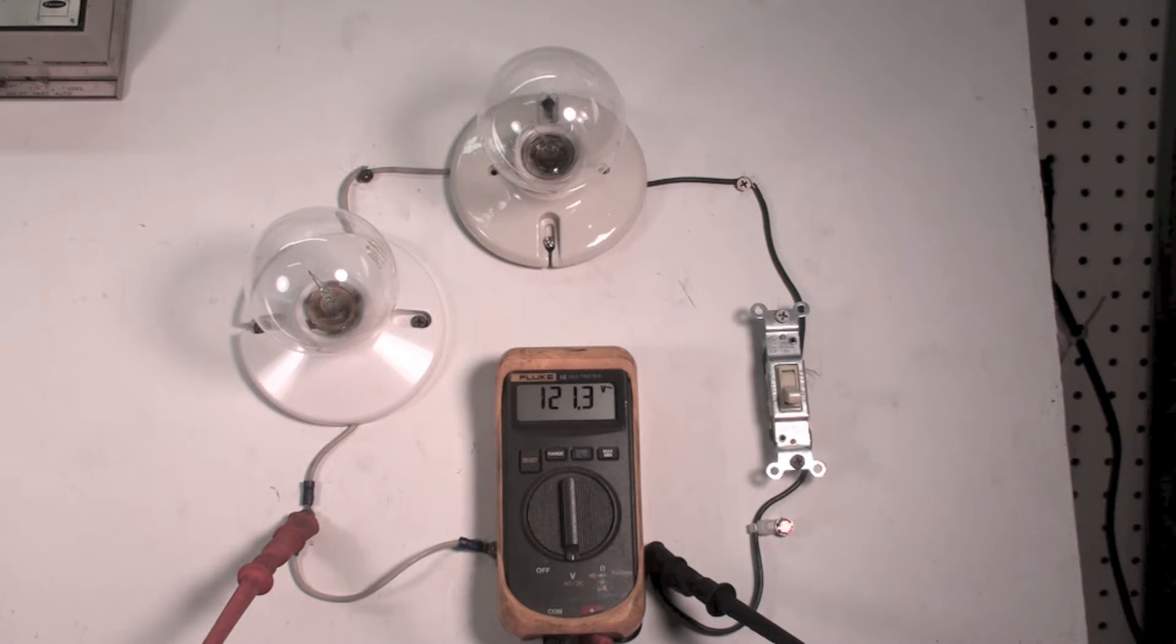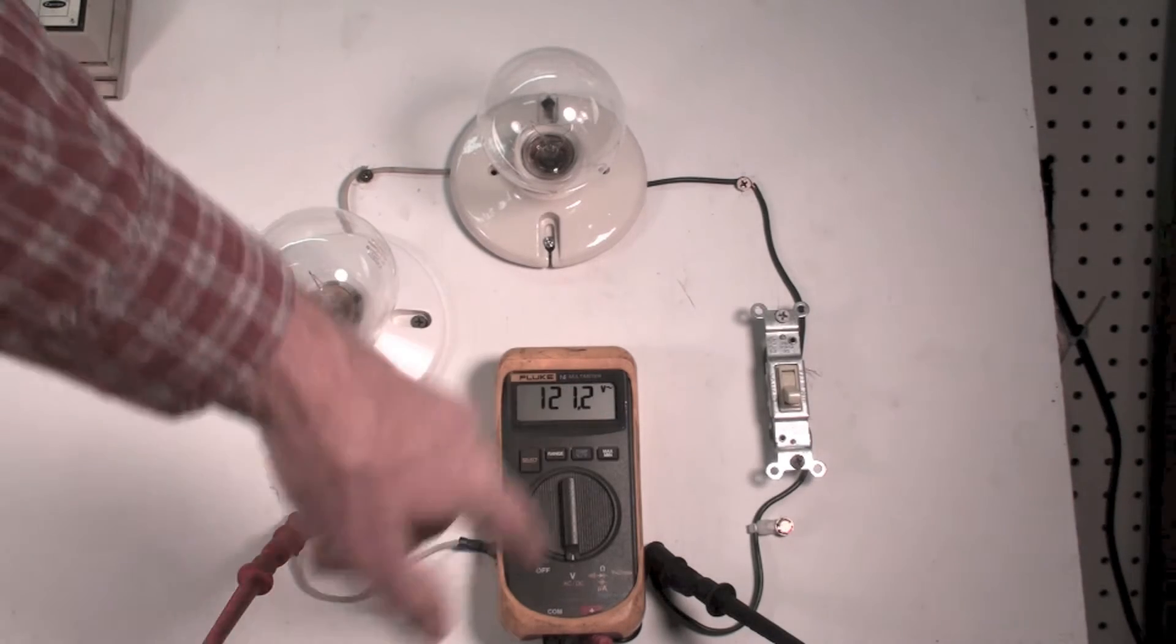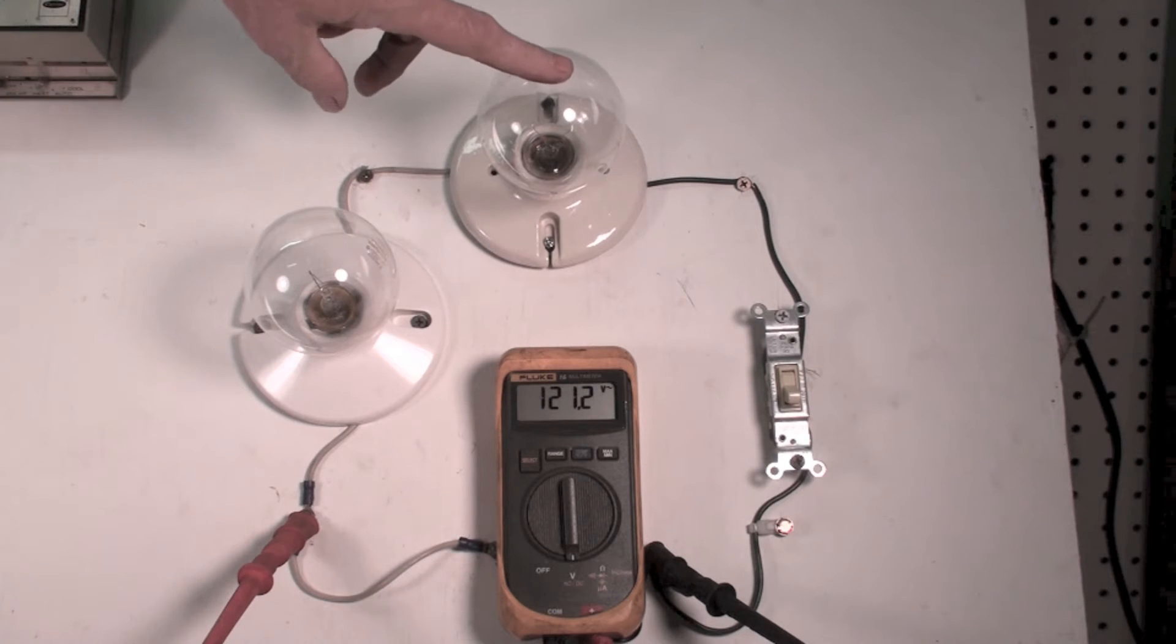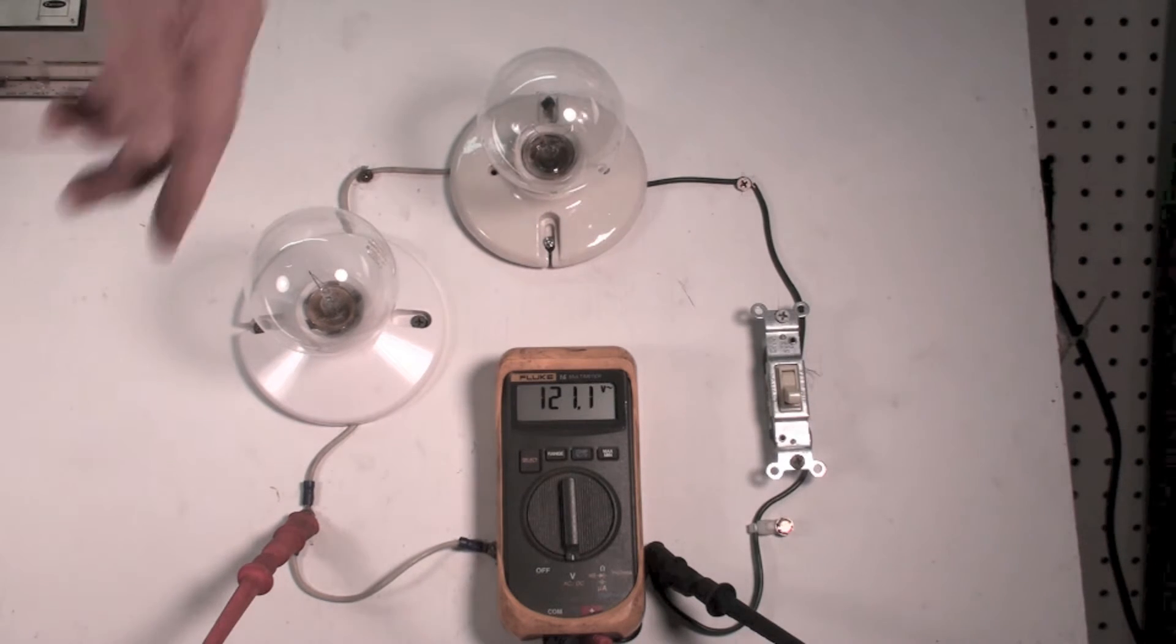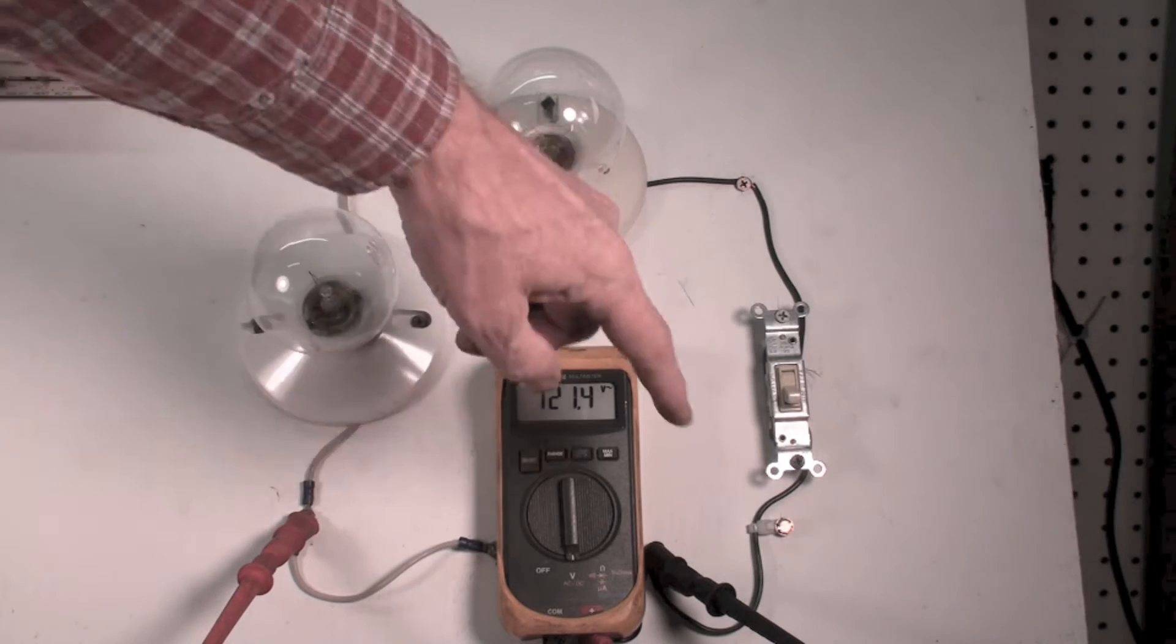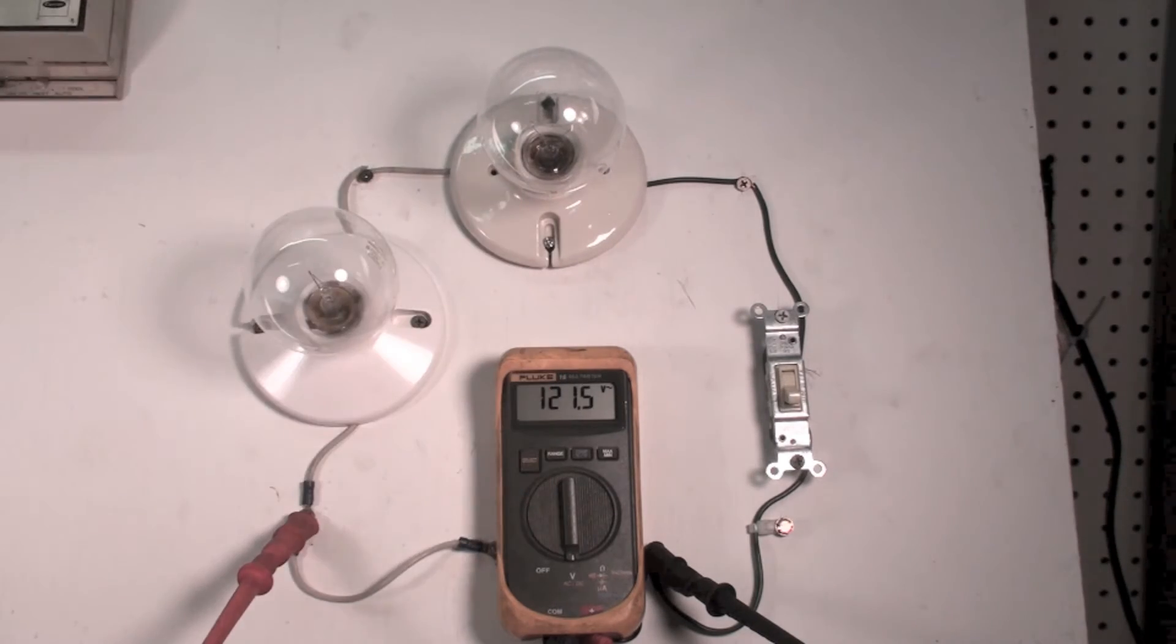If it was in series I'd actually have to cut one of these lines and put the meter across that. And you saw that effectively last time when I burned out the light bulb and I unscrewed the light bulb - I got my 120 volts across there because this connection was broken.